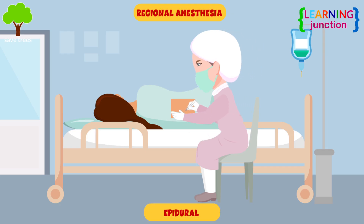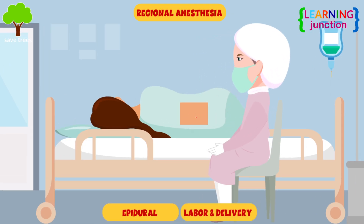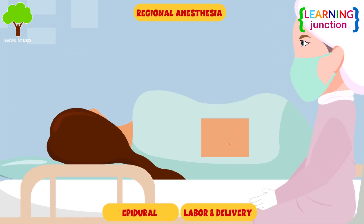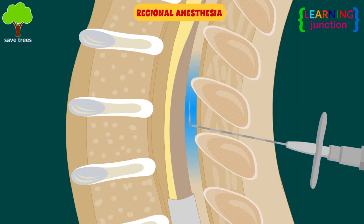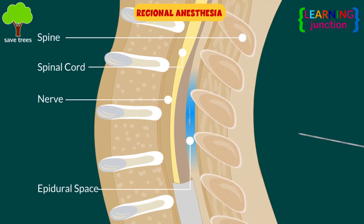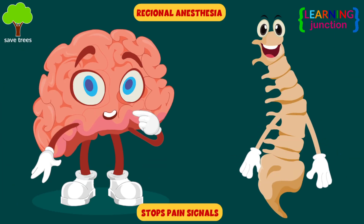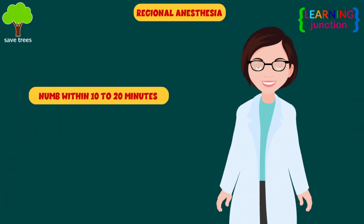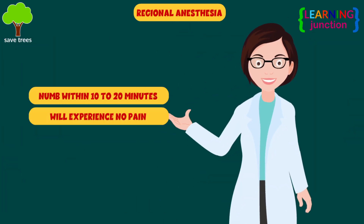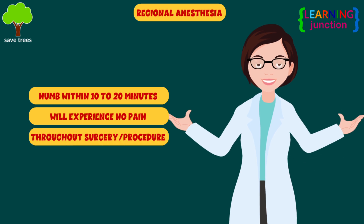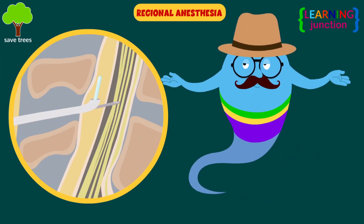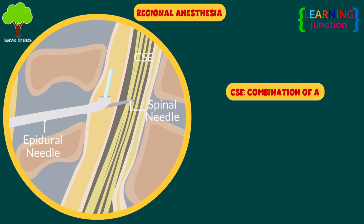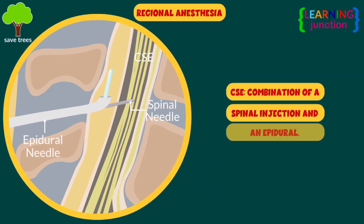Epidural anesthesia is preferred during labor and delivery because with this anesthetic, the mother can still actively participate in the baby's birth. The medication is delivered through a catheter into the space around the spinal nerves, known as the epidural space. It stops pain signals from traveling from the spine to the brain. Patients start to feel numb within 10 to 20 minutes and will experience no pain throughout the entire surgery or procedure. Sometimes CSE is used, which is a combination of a spinal injection and an epidural.